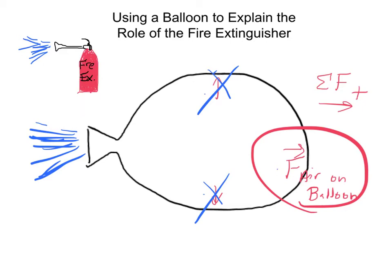Now let's connect this to a fire extinguisher — you get the same idea. When you point the fire extinguisher to the left and the contents are spewed out to the left, it's very similar to the air escaping from the balloon. As a result, just like the balloon gets a net force toward the right, the fire extinguisher will have a net force — the sum of forces — pointing away from where all the contents are being expelled.